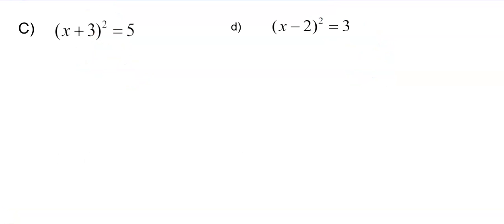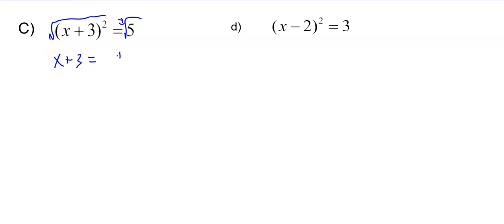Let's step it up a notch. If you have something like this, resist the urge to FOIL that. We could set it equal to 0, factor it and solve it, but it's going to be a lot easier if we just take the square root of both sides. So if you do that on the left-hand side, you get x plus 3 equals plus or minus the square root of 5. So we get x equals negative 3 plus or minus the square root of 5.